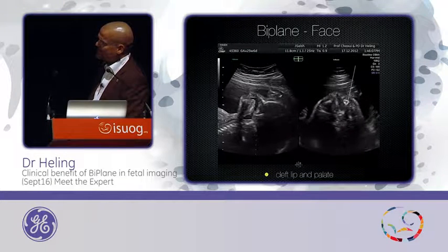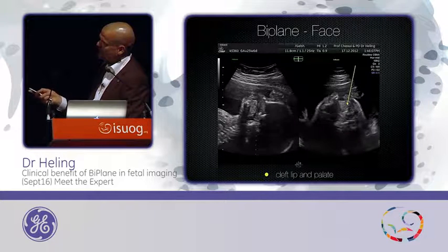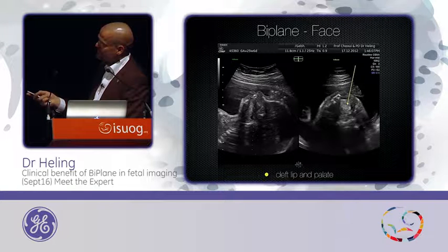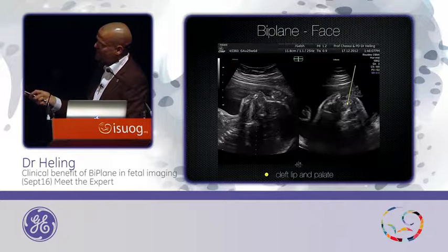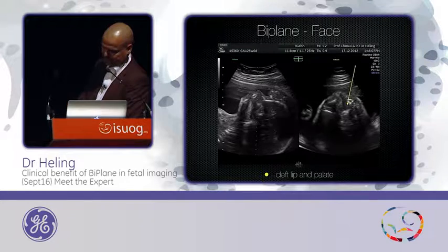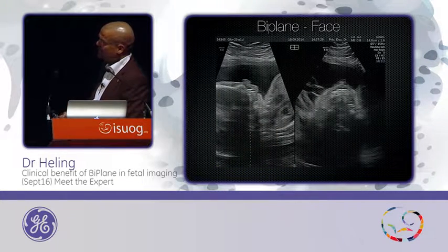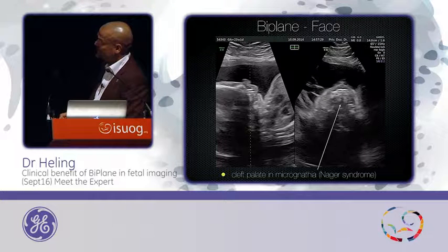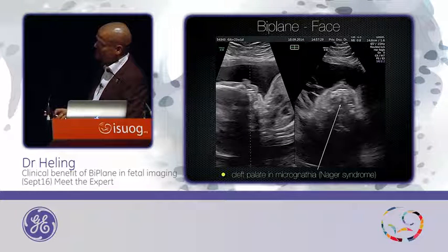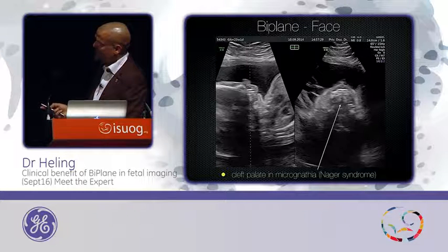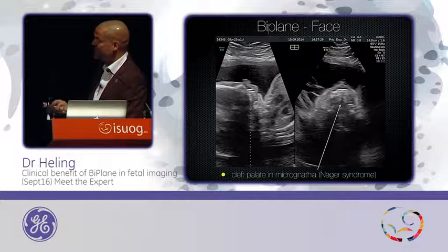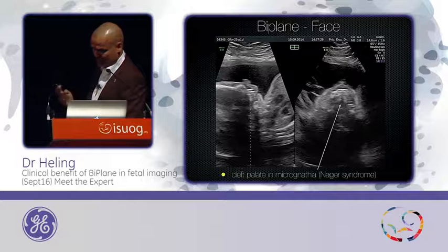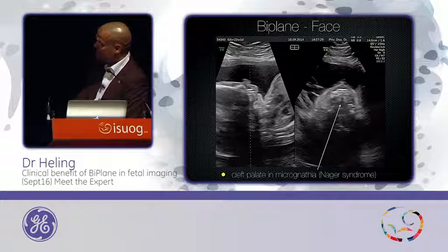This is an example of cleft lip and cleft palate. I put my line through the upper jaw, you see the defect, and you see the fetus is playing with his tongue inside this large defect. You can measure the depth of the cleft lip and cleft palate defect. Another example I saw this week is severe micrognathia — suspicion of Nager syndrome, with nearly no mandible. I put the line through the upper jaw and expect a cleft palate. At 23 weeks, this looks very similar to a typical cleft palate image.